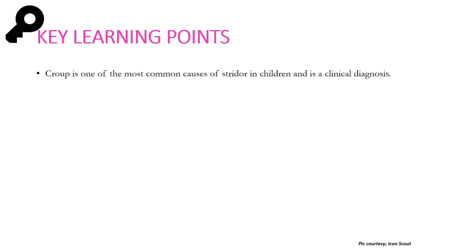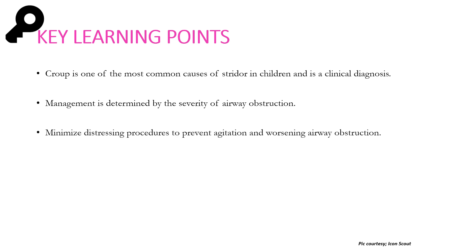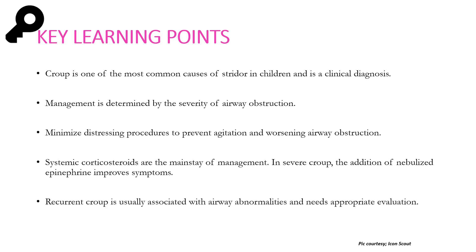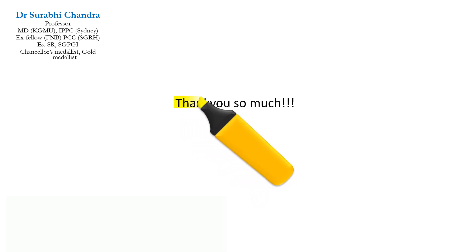Key learning points: Croup is one of the most common causes of stridor in children and is a clinical diagnosis. Management is determined by the severity of airway obstruction using the Wesley Croup Score. Distressing procedures should be minimized to avoid agitating the child, as crying worsens obstruction. Systemic corticosteroids are the mainstay of treatment, and nebulized epinephrine improves symptoms due to its rapid onset. Recurrent croup is generally associated with airway abnormalities and requires evaluation including bronchoscopy.